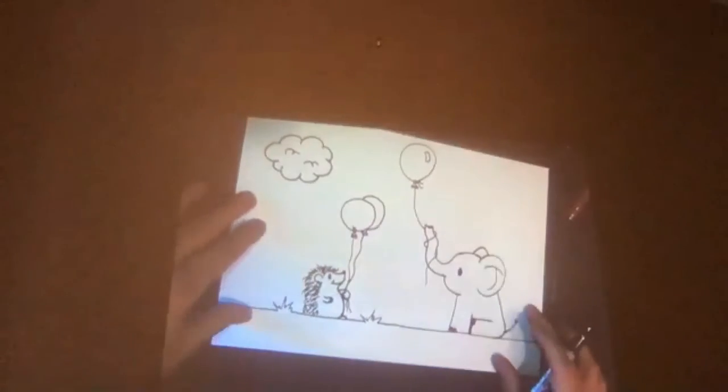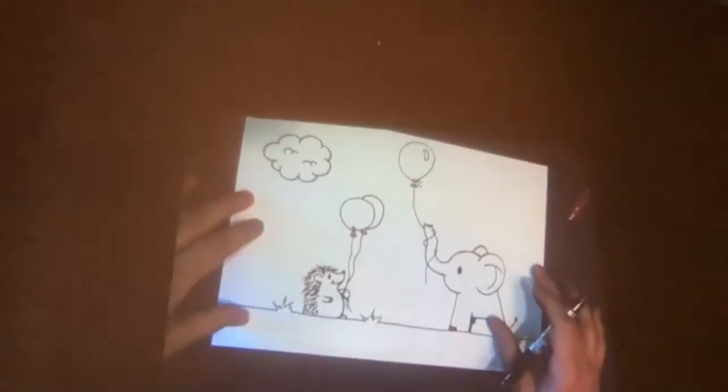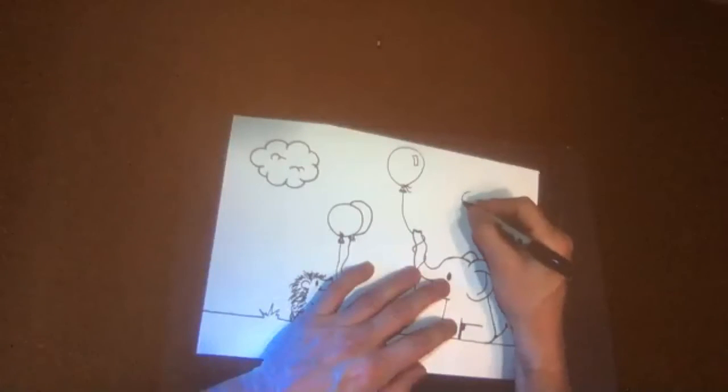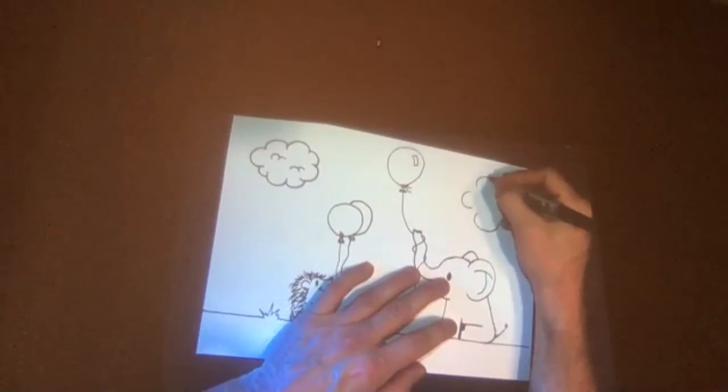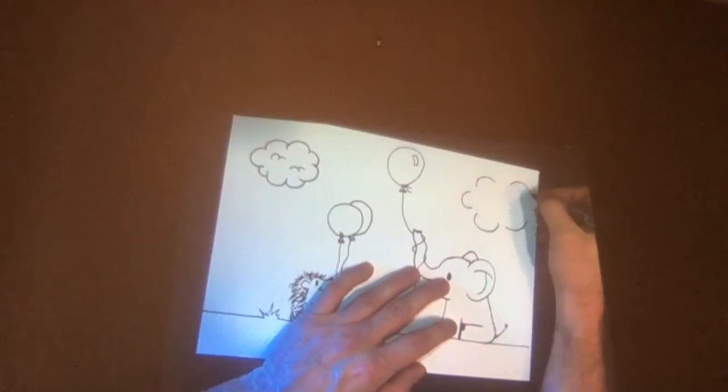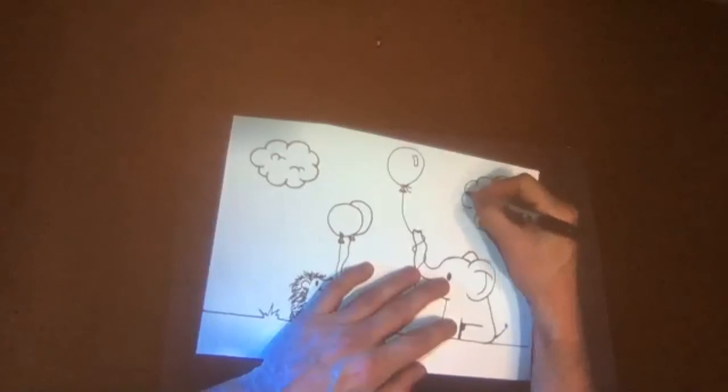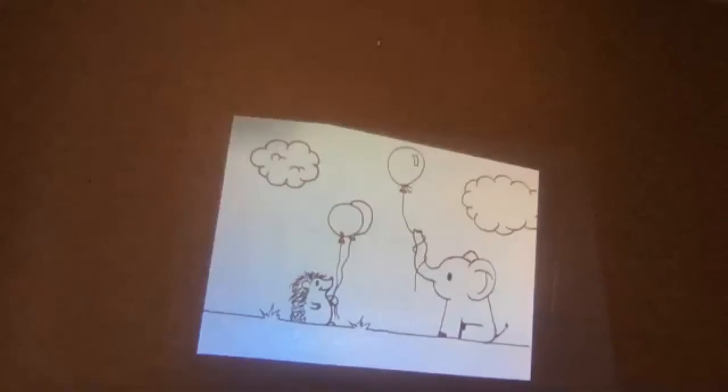So now what I don't like is all the negative space I have here where I could be adding stuff. So I'll put another cloud here. And that'll give me some good balance throughout the artwork. And this one I'll have go off the page to give the illusion that it's much bigger than it actually is. Fun.